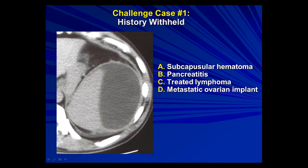Challenge case one, history withheld, giving you four possibilities: capsular hematoma, pancreatitis, treated lymphoma, or metastatic ovarian implant.